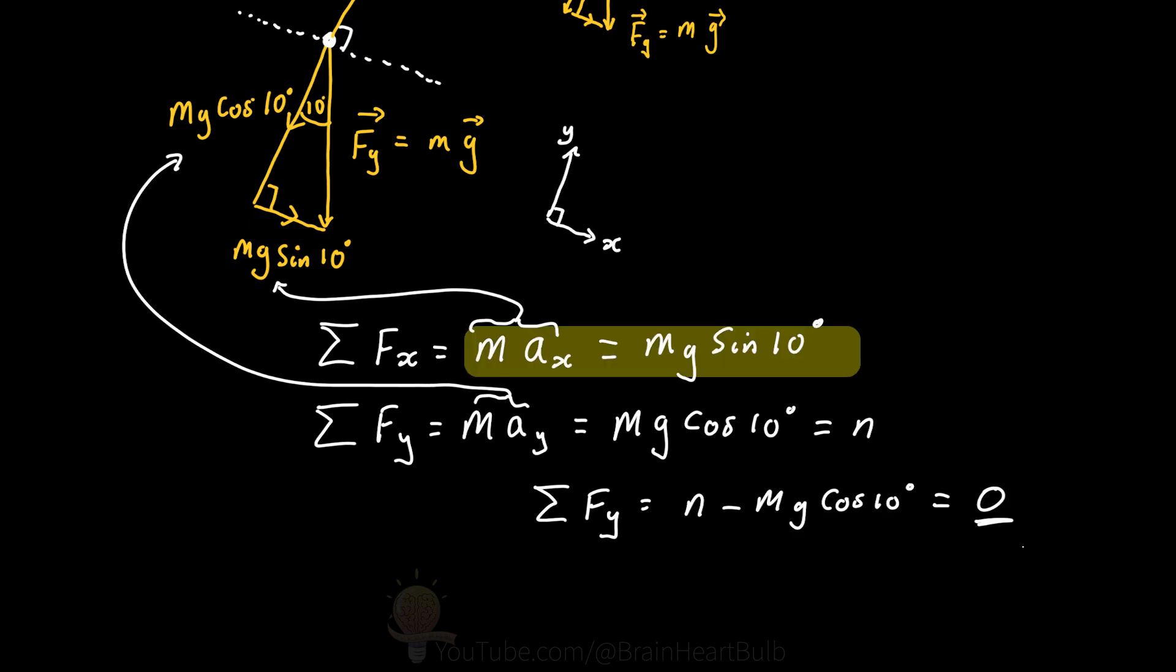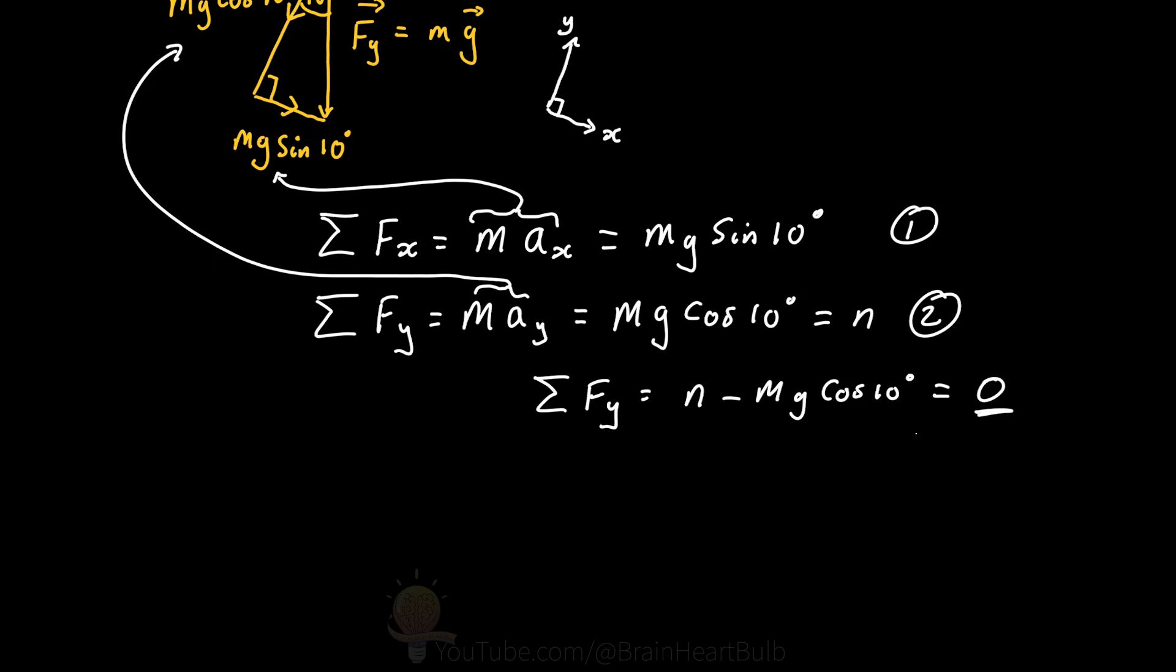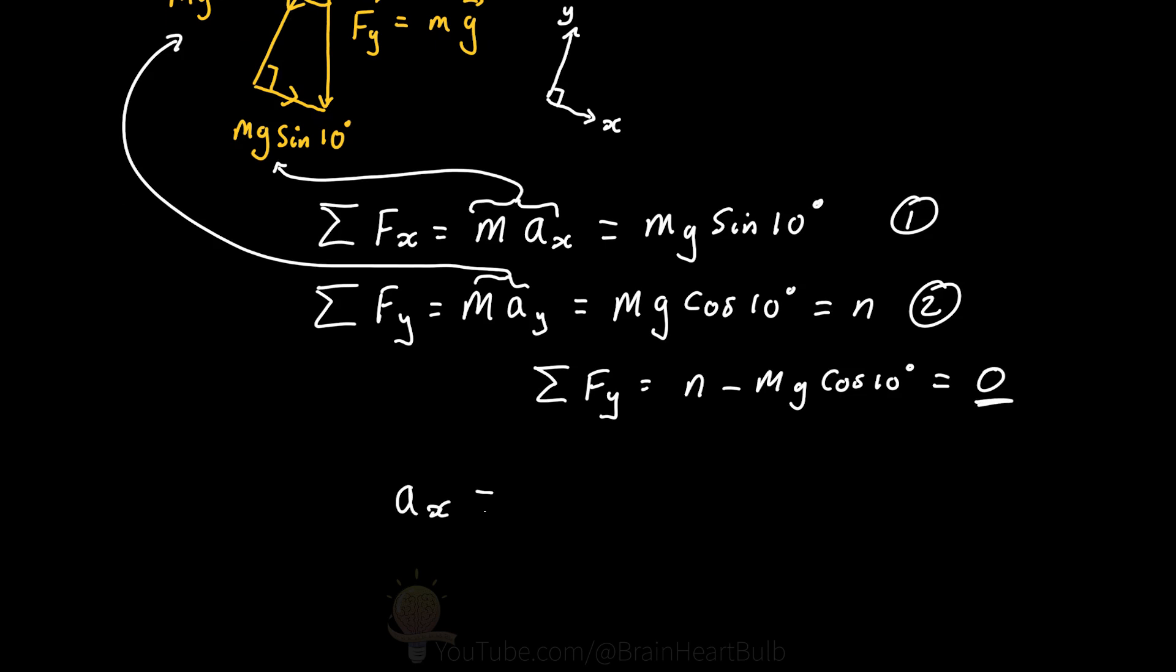But if we have a look at our first equation, we can rearrange this to make the acceleration along the x-axis the subject of the formula. And as we do this, you'll notice that the car's mass gets cancelled out. So it doesn't matter what the mass of the object is, the acceleration is always going to be the same.